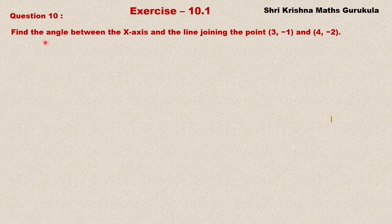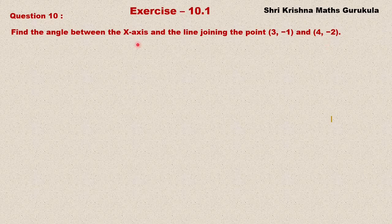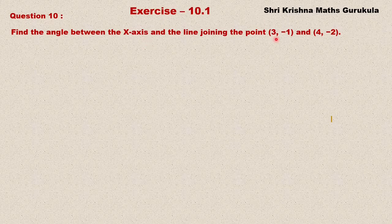Question number 10 goes like this: Find the angle between the x-axis and the line joining the points (3, -1) and (4, -2). They have given us two points. You join them and form a line segment, and that line makes an angle with the x-axis. Note that nowhere have they specified that the angle has to be with the positive direction of the x-axis.